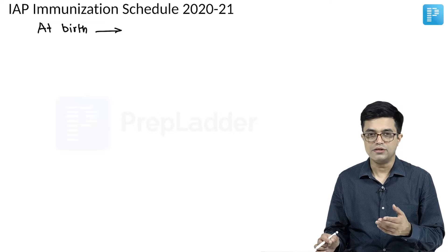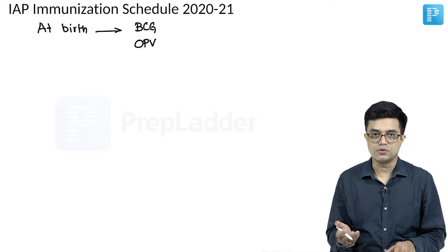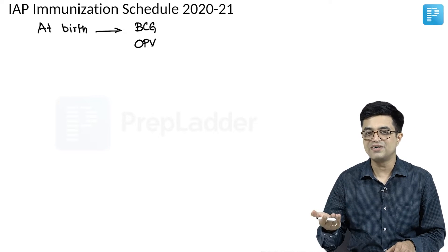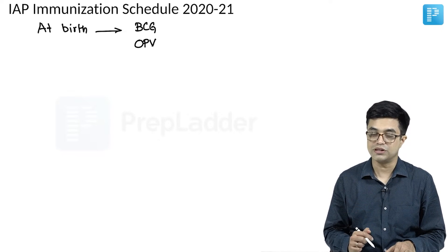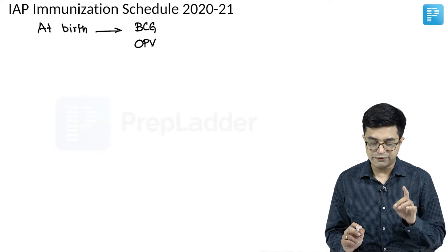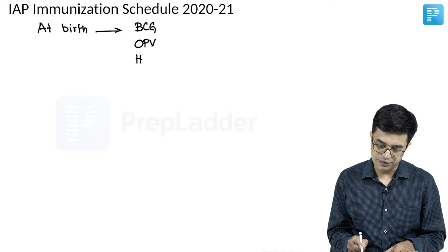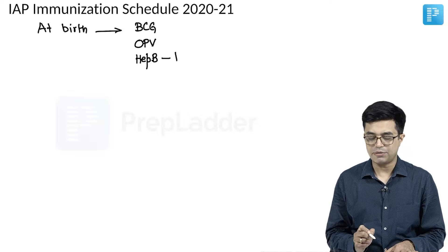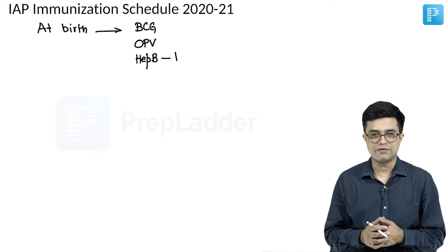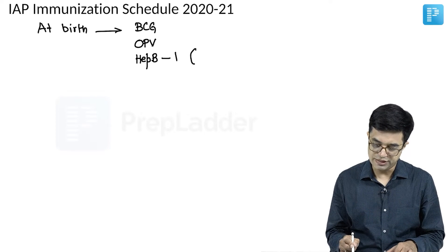In the IAP schedule, we do not use the term zero dose. BCG will be given just like the national immunization schedule. You will give OPV — we do not call it zero dose, because only a single OPV dose is given at birth and subsequent doses of OPV are not part of the IAP schedule. Instead of calling it hepatitis B zero dose, IAP calls it hepatitis B one dose — also written as BD, meaning birth dose. The nomenclature is different; the national schedule calls it zero dose, this schedule calls it one dose.